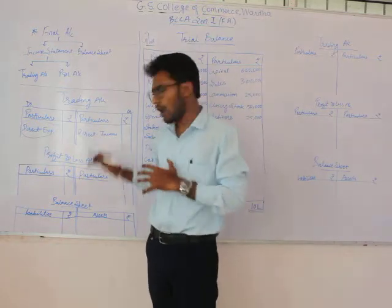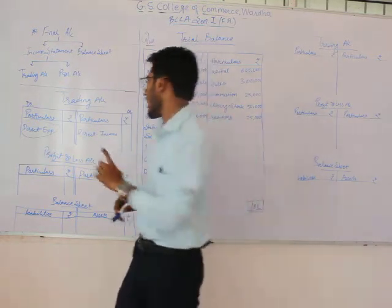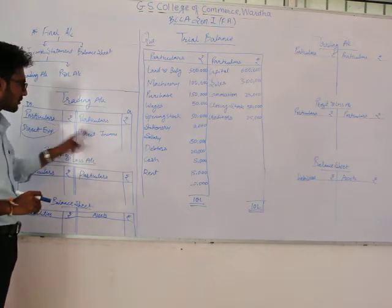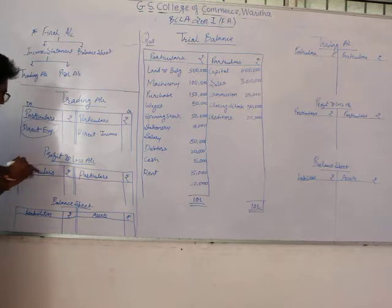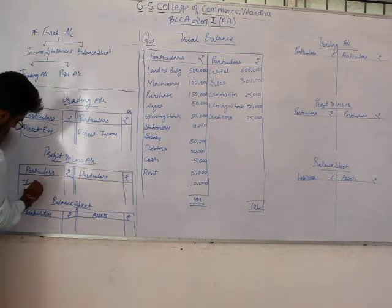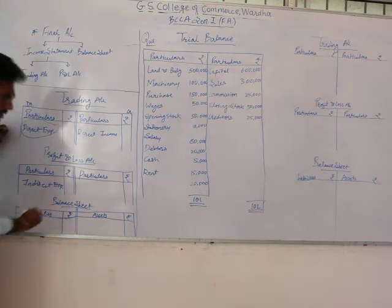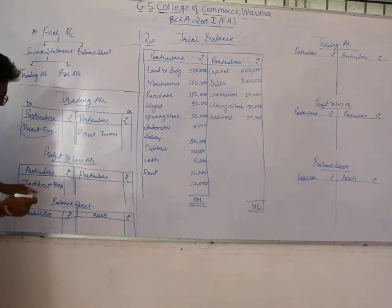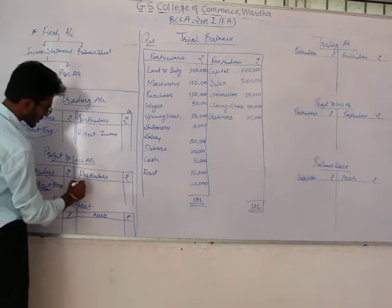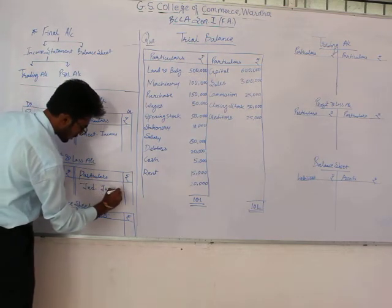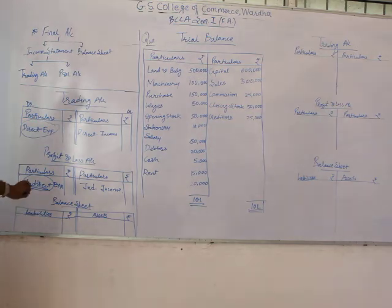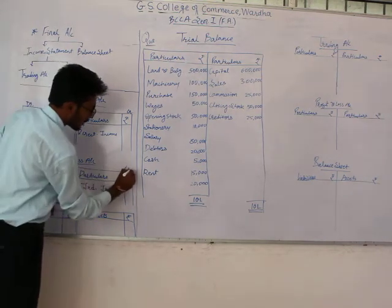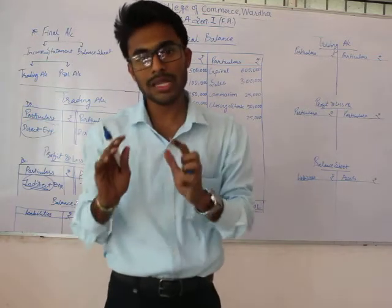After the Trading Account, we proceed to the P&L Account. The Trading Account consists of direct expenses and direct income on its two sides, while the P&L Account consists of indirect expenses on the debit side and indirect income on the credit side. You have to write indirect expenses on the debit side and indirect income on the credit side of your P&L Account. That is how you create the P&L Account.